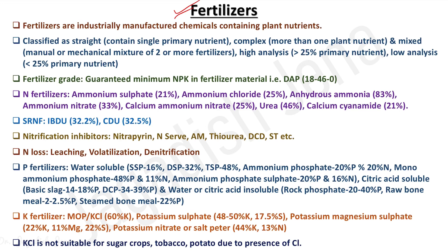To fulfill the depleted soil fertility, we can apply organic manures, FYM, vermicompost, organic fertilizers, or bio-fertilizers to solubilize fixed nutrients. Alternatively, we can use fertilizers — chemically manufactured synthetic products containing certain quantities of nutrients for plant growth.